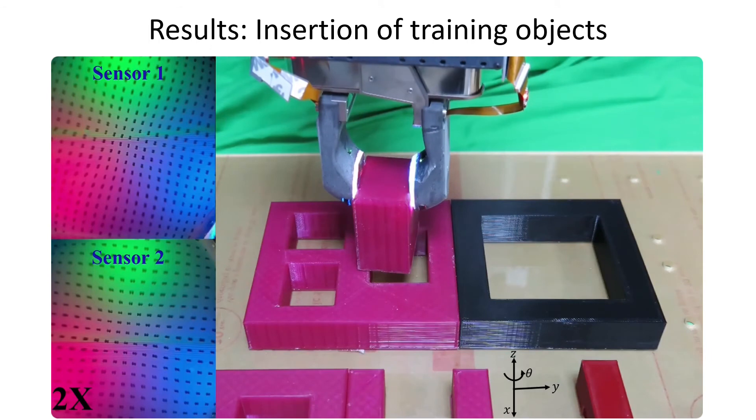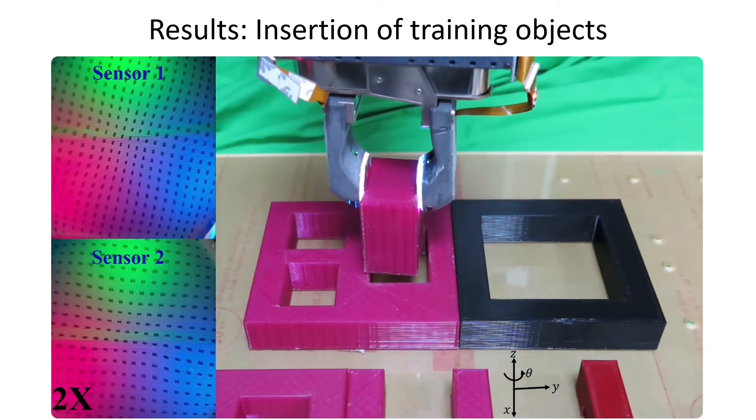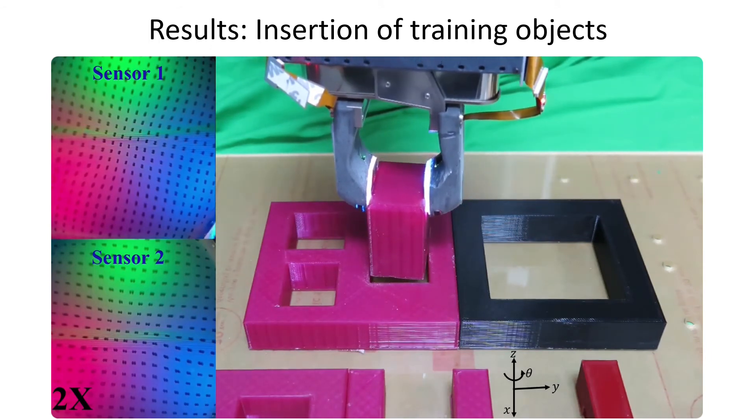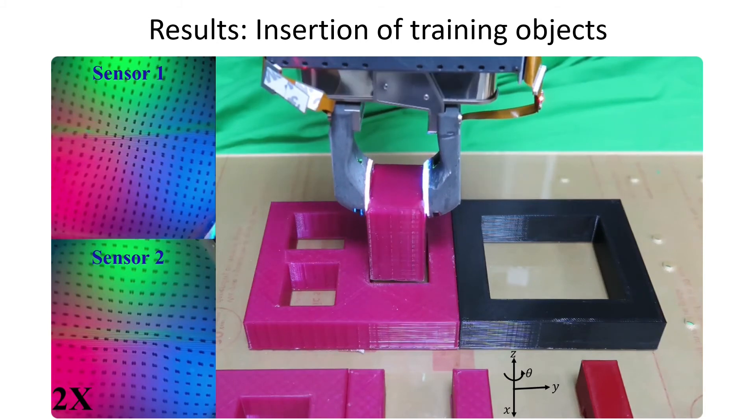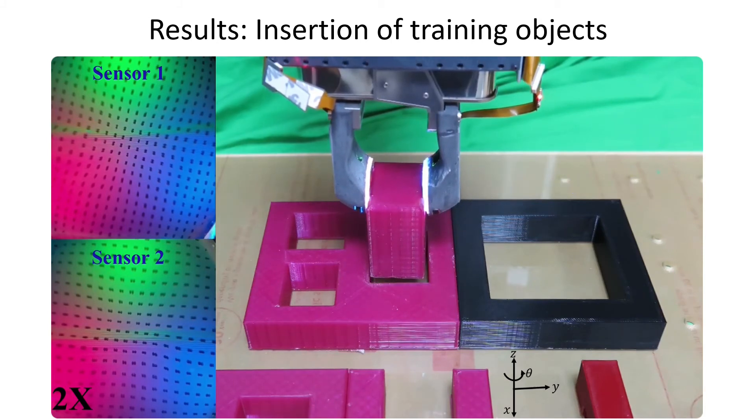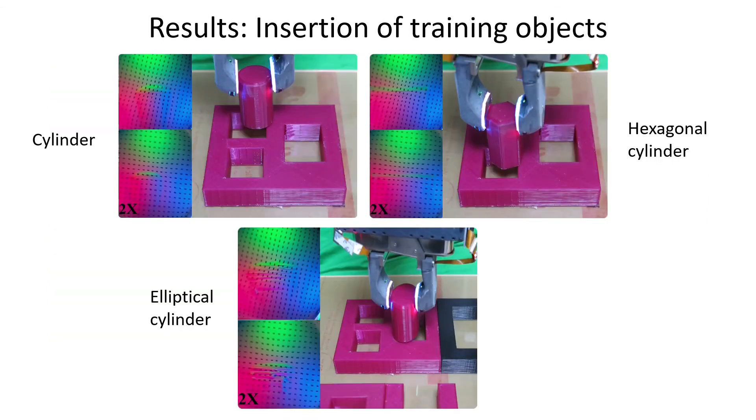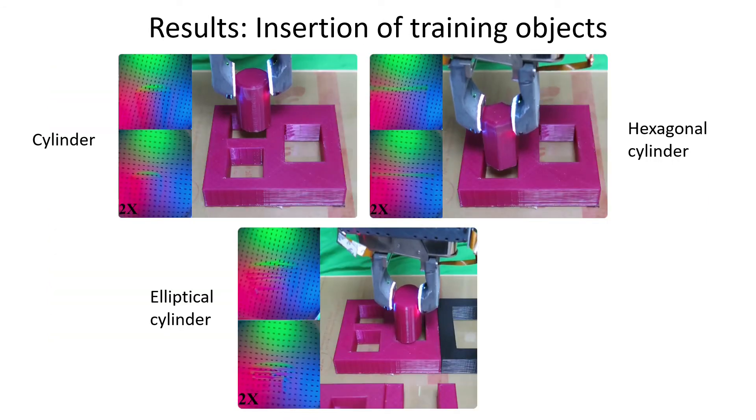The tactile-based RL policy with curriculum training and tactile flow representation can insert the training object within a few attempts. Here we show the example with the cube-shaped training objects, and the performance with other three training objects.